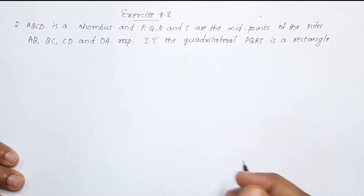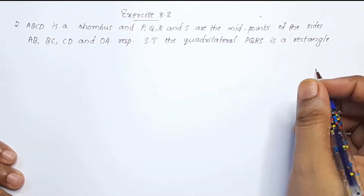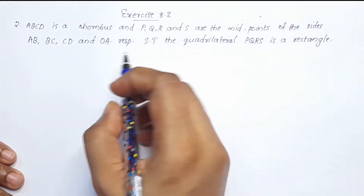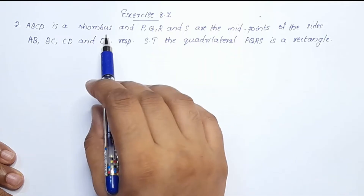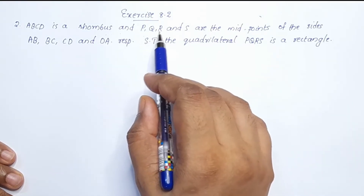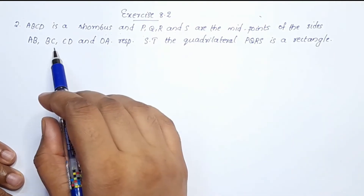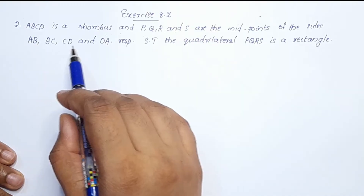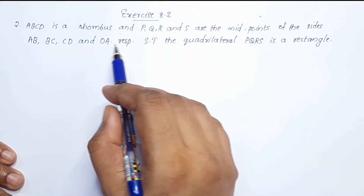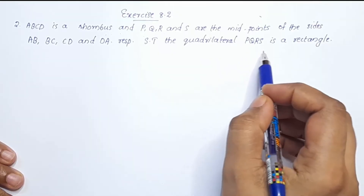This is exercise 8.2, question number 2. ABCD is a rhombus and P, Q, R and S are the midpoints of the sides AB, BC, CD and DA respectively. Show that the quadrilateral PQRS is a rectangle.